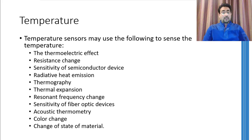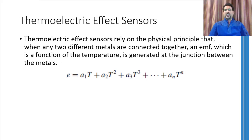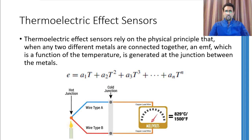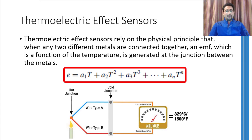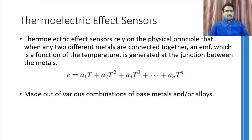The sensors which rely on the thermoelectric effect to measure temperature are called thermocouples. The thermoelectric effect gives rise to an EMF when two different metals are connected together. The EMF generated at the junction of these two different metals is dependent on the type of metal and the temperature of that junction. This relation is shown by a polynomial equation. In practice, there are various combinations of base metals or alloys that are employed to make up a thermocouple to detect temperature.